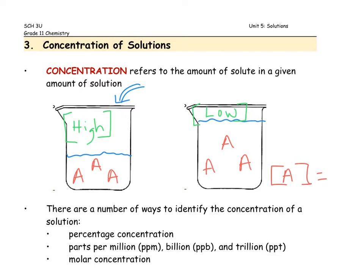There are several ways we can identify the concentration of a solution that we're going to talk about today. The first is percent concentration, which is the most common. Another one you might be familiar with is parts per million, or ppm, parts per billion, ppb, or parts per trillion, ppt. And the last of the three is one used more in chemistry and not broadly in society — that's molar concentration.